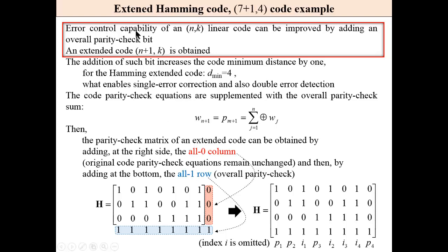Generally, the error control capability of any linear code can be improved by adding an overall parity check bit at the end of the codeword — an extension of the given code is obtained. This addition increases the code minimum distance by one. For the extended Hamming code, the Hamming distance is 4, which enables single error correction as for the regular Hamming code, but also double error detection.